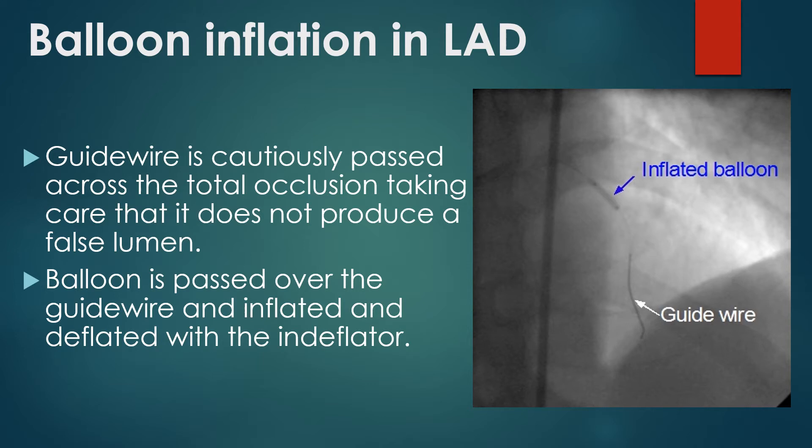The guide wire is cautiously passed across the total occlusion, taking care that it does not produce a false lumen. If the wire is able to pass back and forth easily into multiple side branches, we can be sure that the wire is in the true lumen.